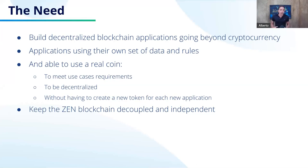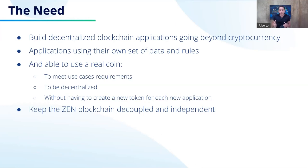Moreover, a coin with a real value is useful to have real decentralization. Because a blockchain needs to reward the actors that are contributing to it to make it decentralized. For example, if we have a proof of stake blockchain, we need to reward the forgers that are submitting the blocks, because otherwise they will not have the incentive to do it. So to obtain real decentralization, we need to have a real coin to reward the actors that are joining the network.